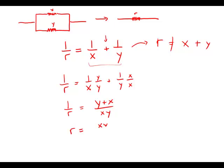I get R equals XY over Y plus X. We can write the addition in the denominator in either order. So we can also write that as X times Y over X plus Y. And this is answer choice D.